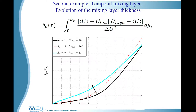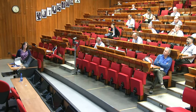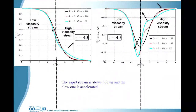Another example is a temporally evolving mixing layer studied using DNS. You have two streams — one rapid and one slower — with variable viscosity, where the rapid stream is less viscous than the slower one. We see that as the viscosity ratio between the two streams increases, the mixing layer thickness evolves much more rapidly: the mixing layer opens more, mixing is enhanced, and all fluctuations are born earlier.